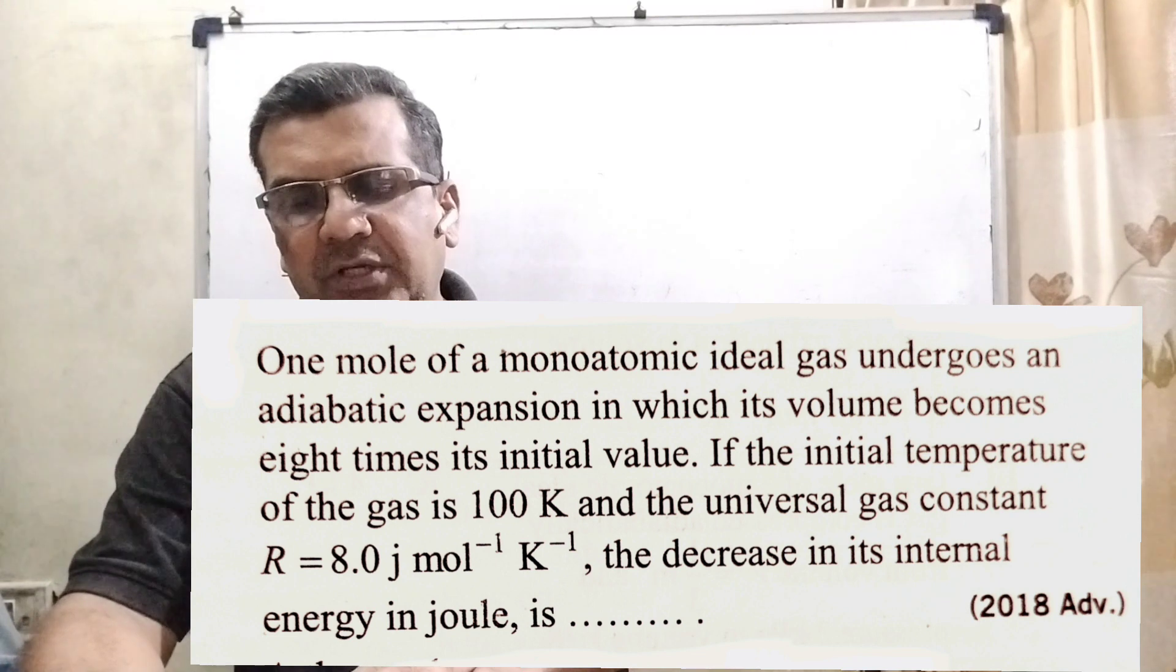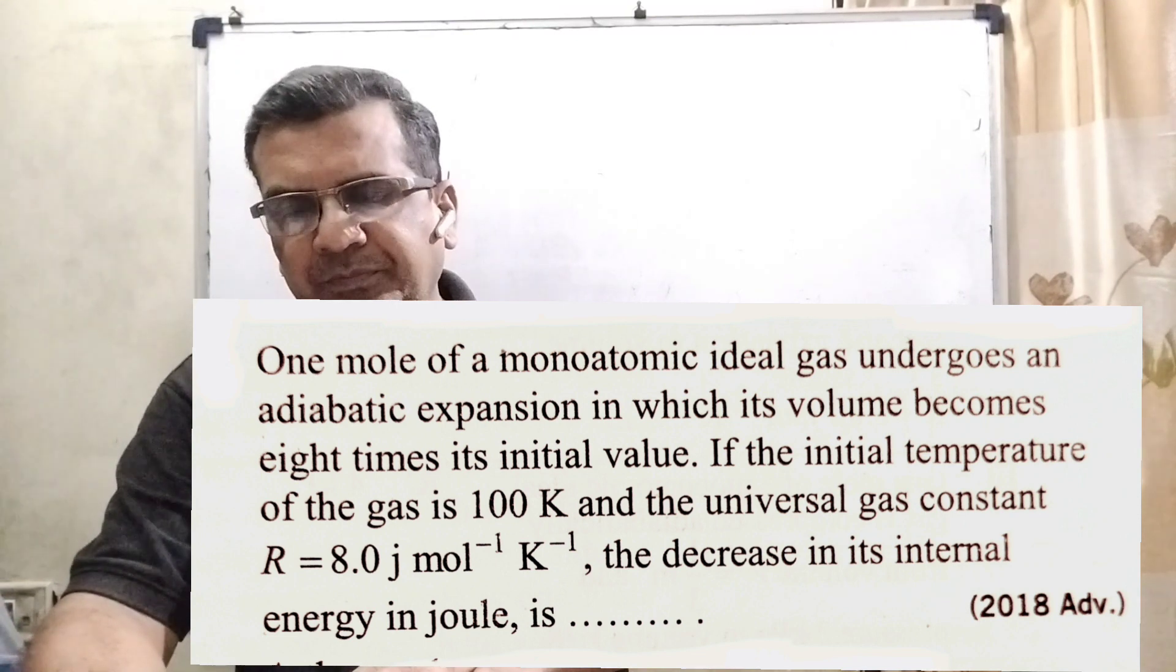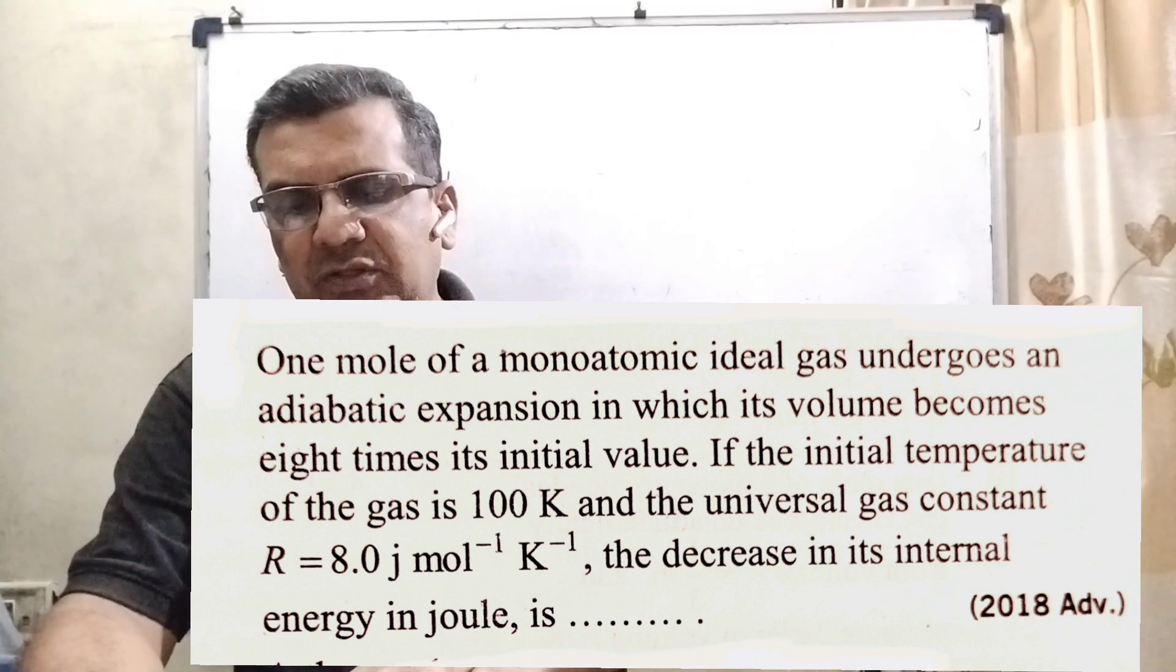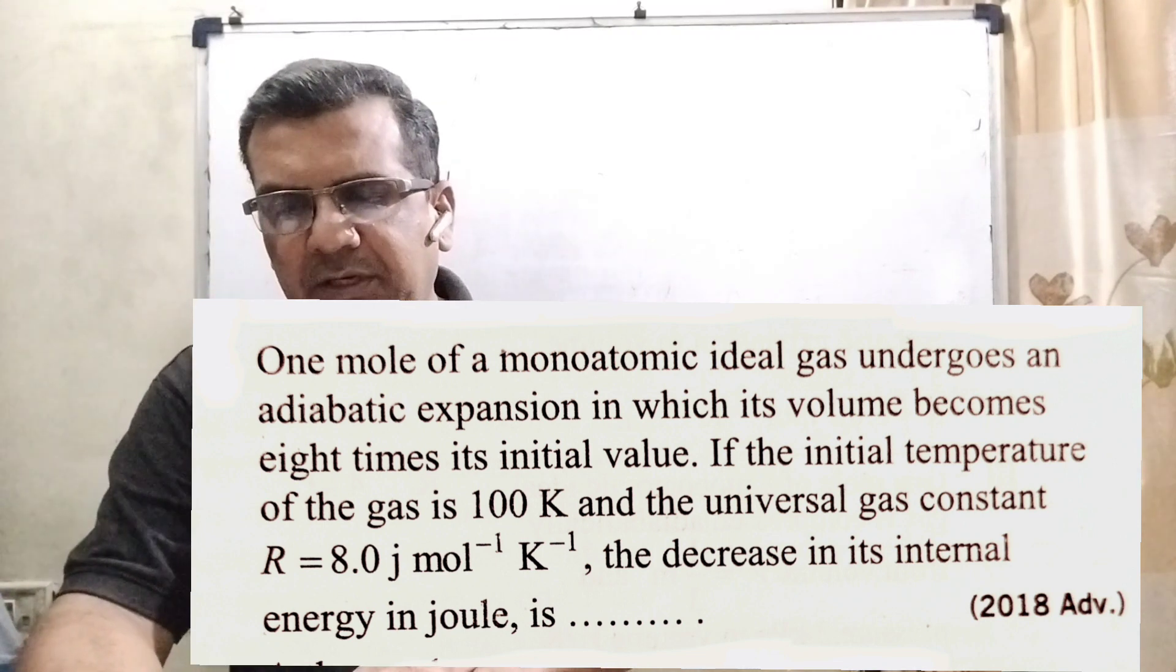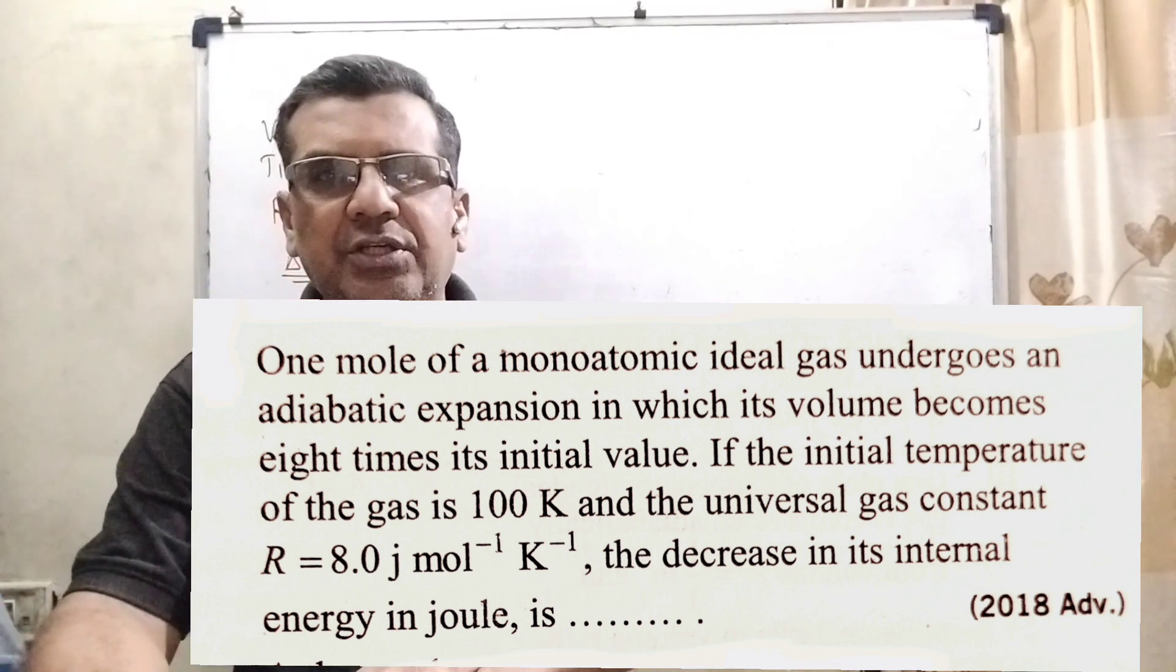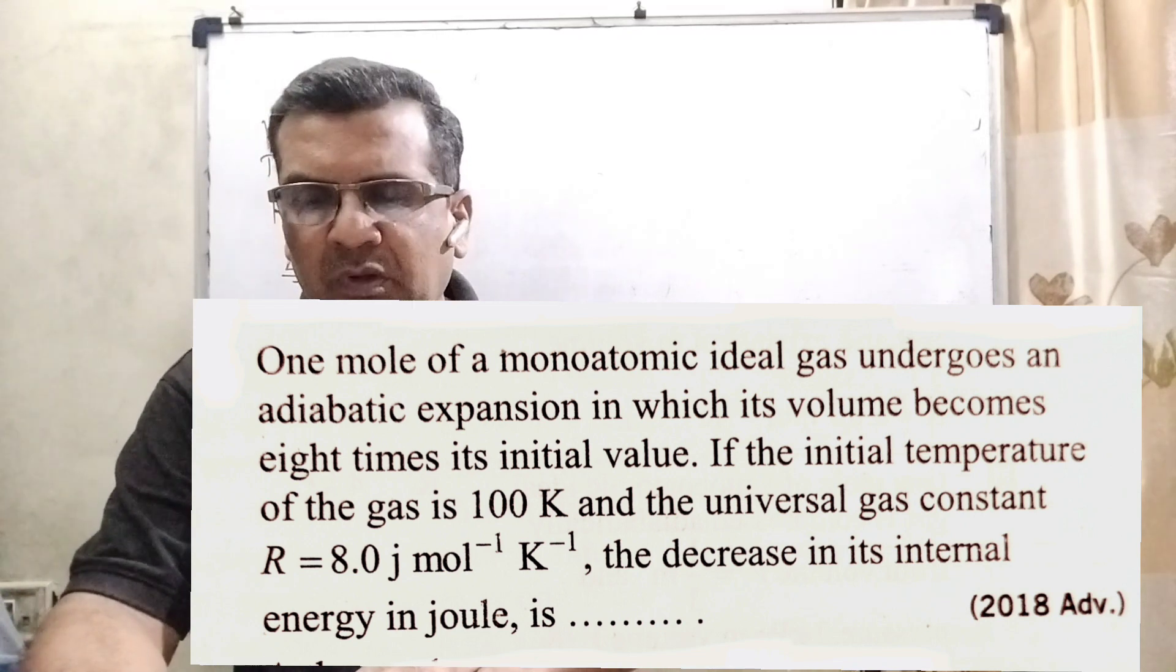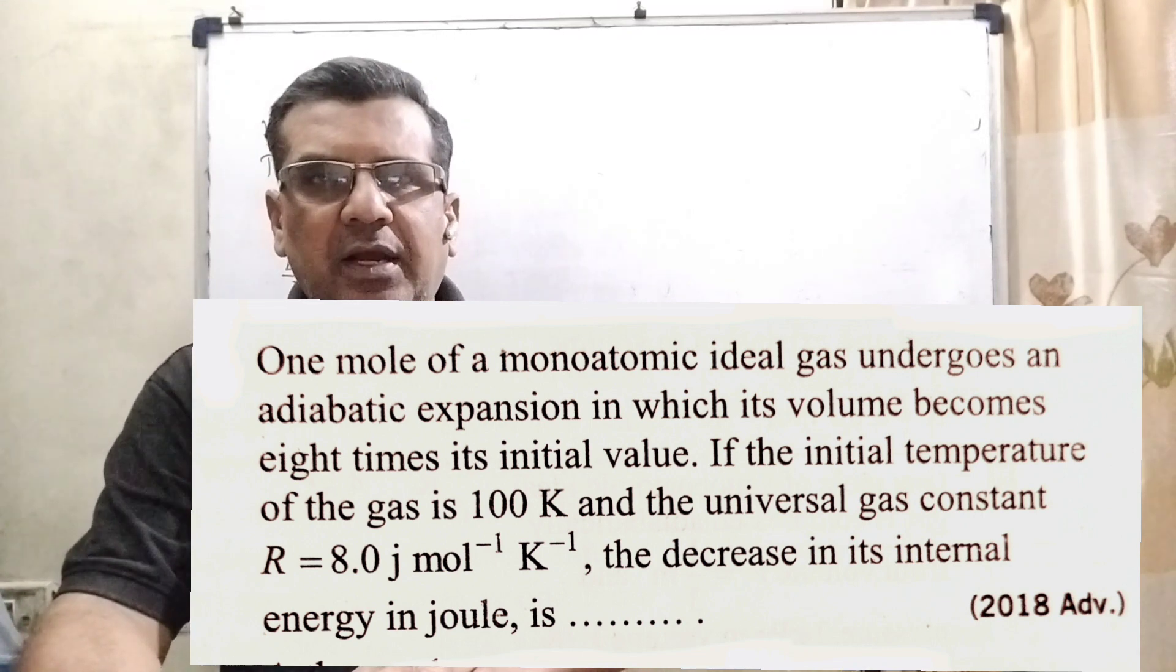If the initial temperature of the gas is 100 Kelvin and the universal gas constant R equals 8 joule per mole per Kelvin, the decrease in its internal energy in joule is. This question is asked 2018 advance.